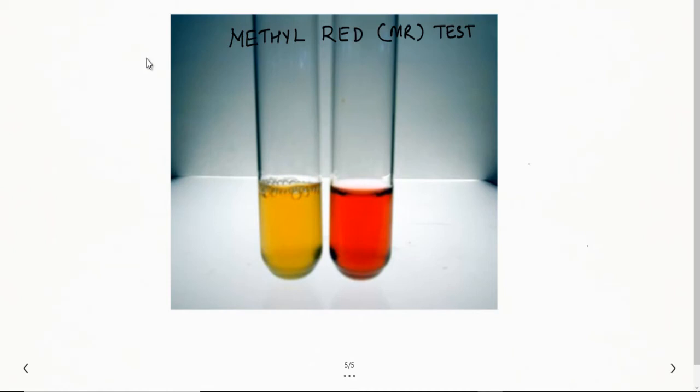The methyl red test, also known as MR test, uses a liquid culture medium called glucose phosphate broth. Some people also call it MRVP broth because this medium is common for both methyl red as well as Voges-Proskauer test.